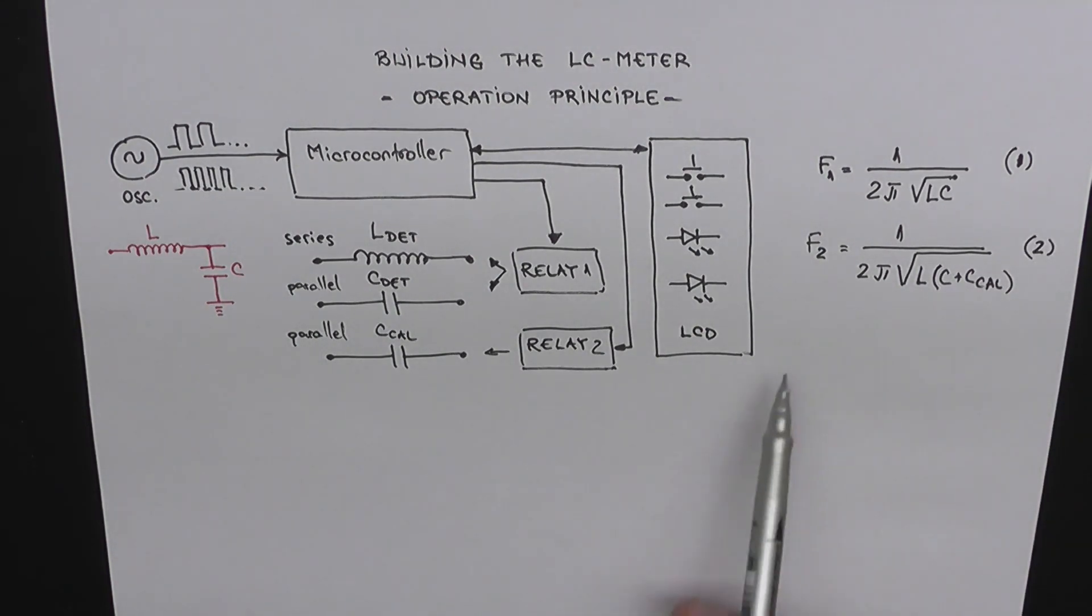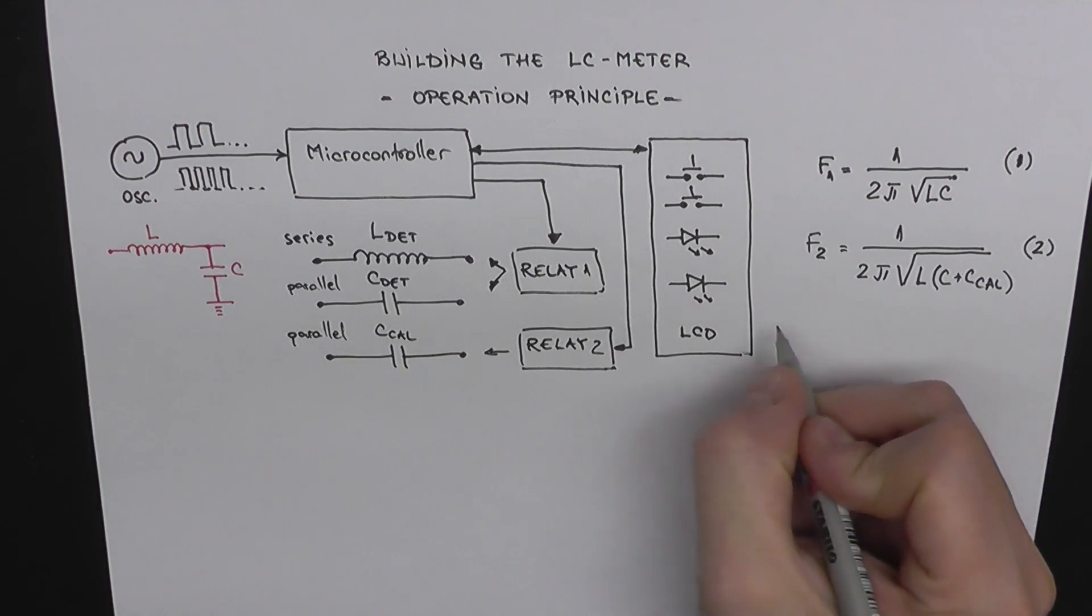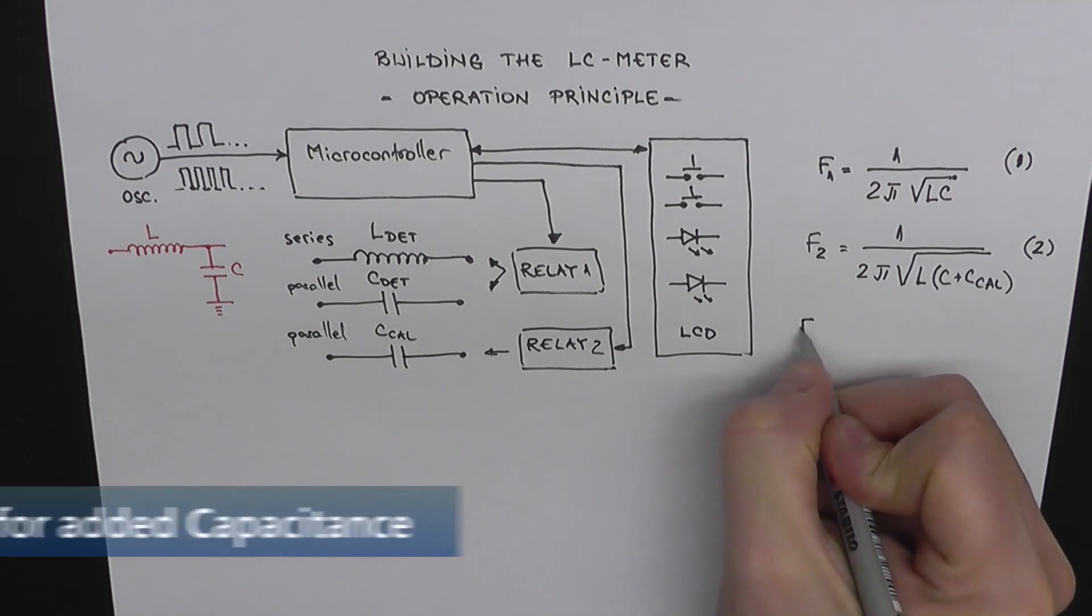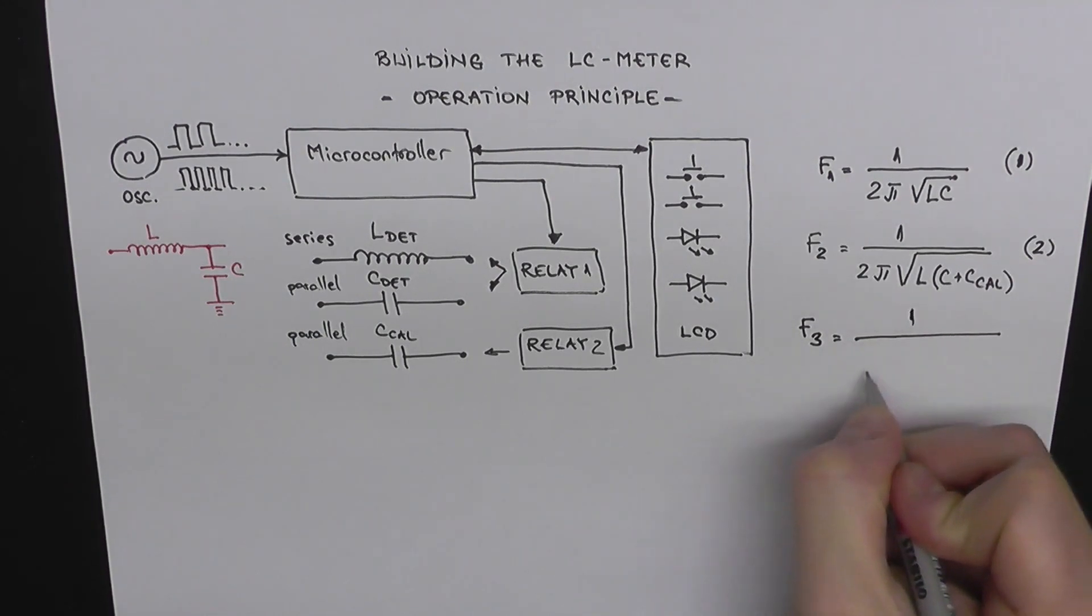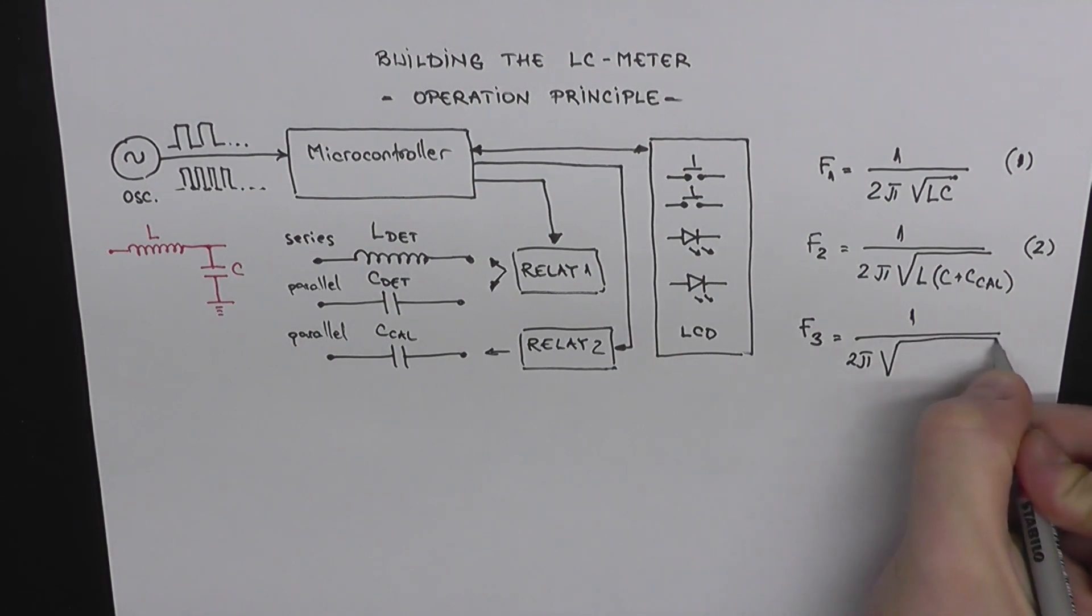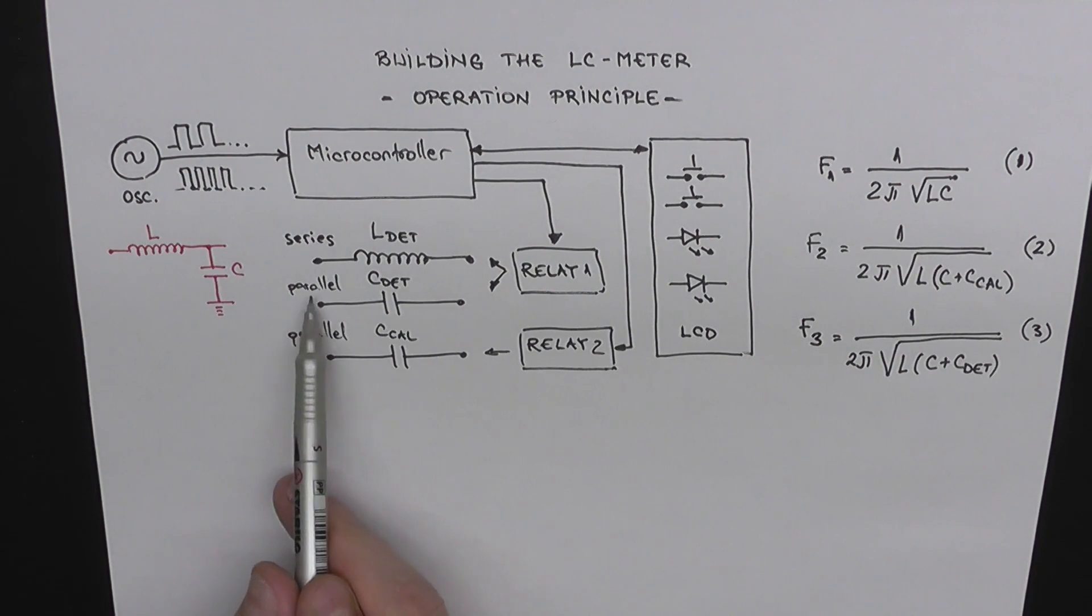After that, we disconnect Ccal. And now we're going to have two scenarios. Depending on what we want to measure, capacitance or inductance, we switch relay 1. First, let's add CDET and we measure the frequency again. We can write F3 equals 1 over 2π square root from L multiplied with C plus C to determine. Equation number 3. This is the equivalent capacitance of the two capacitors in parallel.